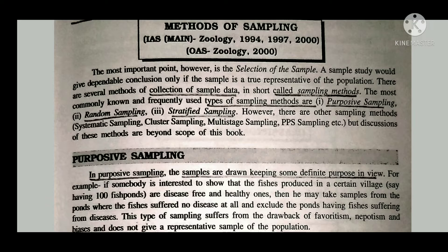For example, if somebody is interested in showing that the fishes produced in a certain village — say, having a hundred fish ponds — are disease-free and healthy, then he may take samples from the ponds where the fishes suffered no disease at all, and exclude the ponds having fishes suffering from diseases.